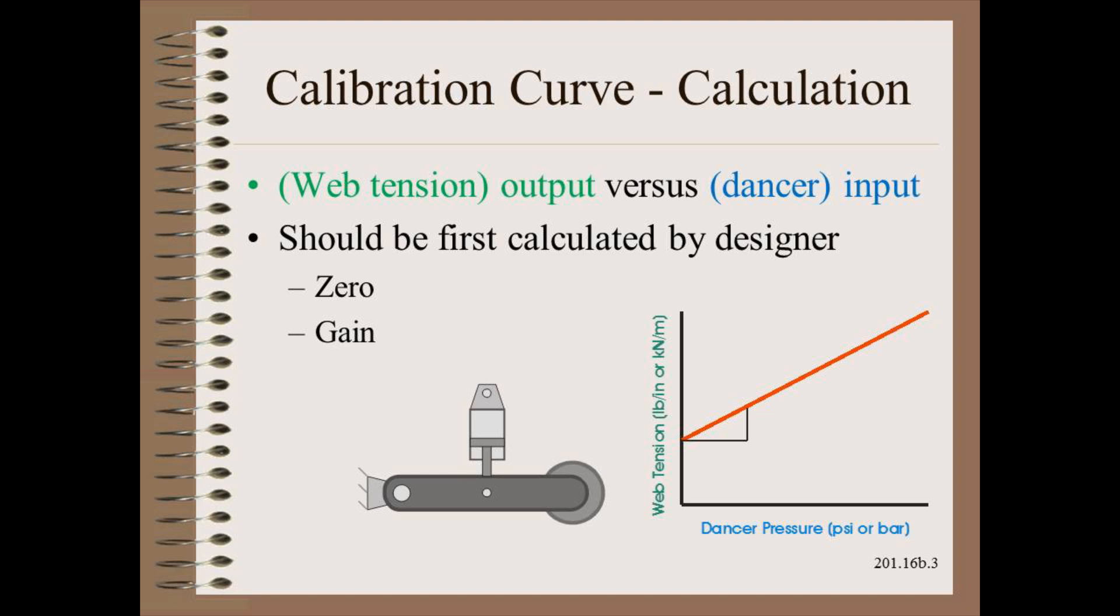So what does calibration mean? It means that we have a curve of web tension versus dancer pressure. This can be achieved in one of two ways. First,